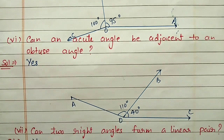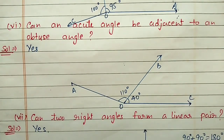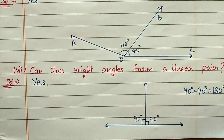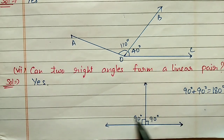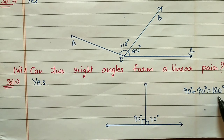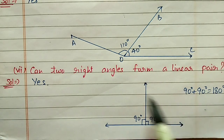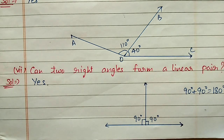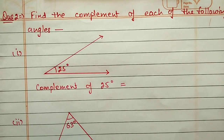Seventh part: can two right angles form a linear pair? You can see two right angles here. If you add these two right angles, the answer is 180 degrees. So yes, two right angles form a linear pair, since the sum of two angles should be 180 degrees for a linear pair.